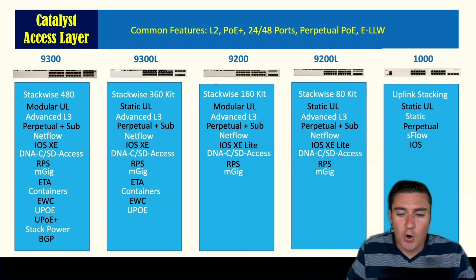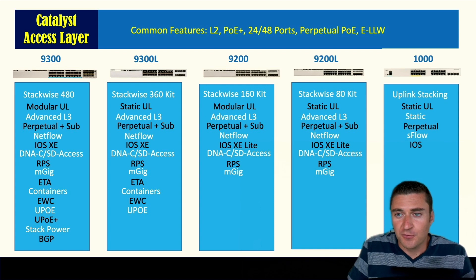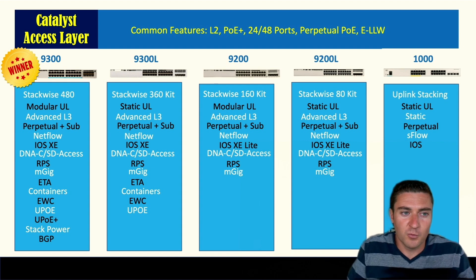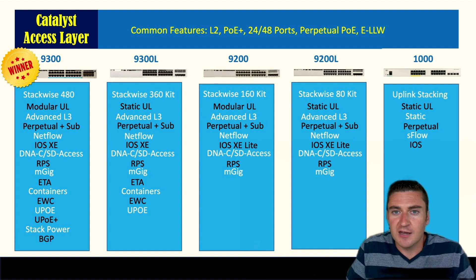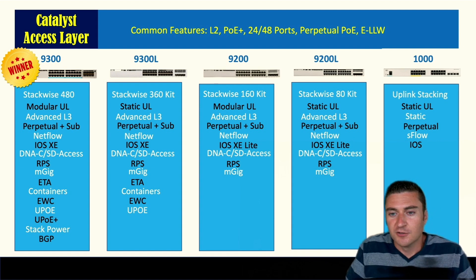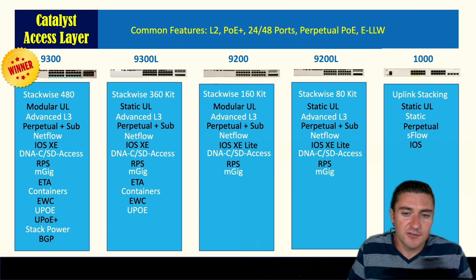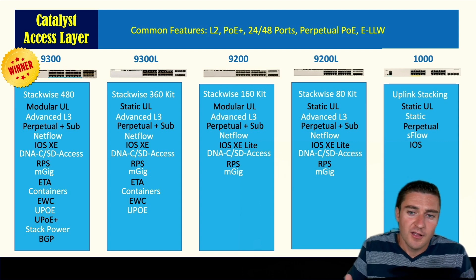I hope this helped you figure out which switch is right for your organization. For me, it's a clear winner — the 9300 can do everything. I made an entire video on why the 9300 is the best switch out there, and I still don't think any competitor is close to touching it. If you liked this video, give it a thumbs up, let me know in the comments, and tell me what other topics you'd like covered.